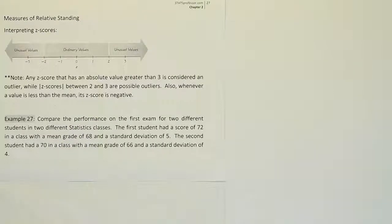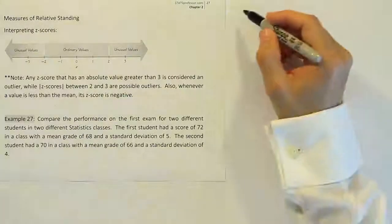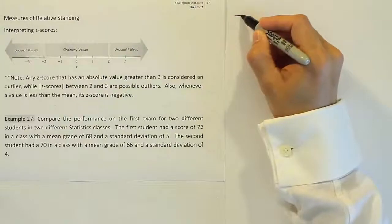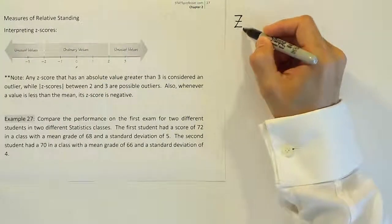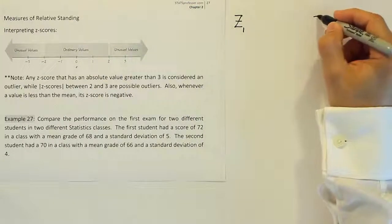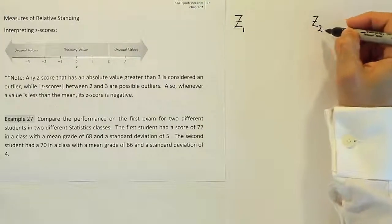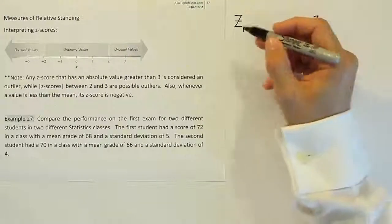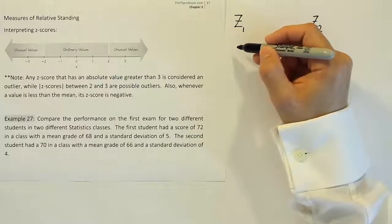So if we're going to use z-scores, we're going to have two calculations in the problem. The first calculation will be the z-score calculation for the first student, and the second calculation will be the z-score calculation for the second student. So with that in mind, let's write down what we have in the problem for each student.